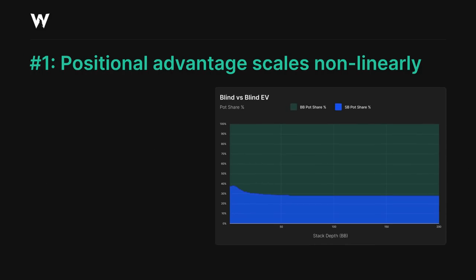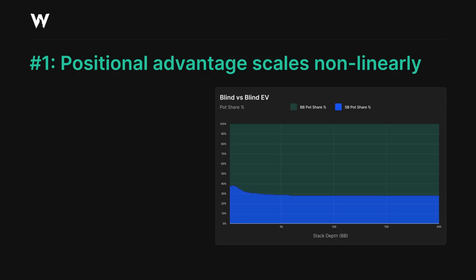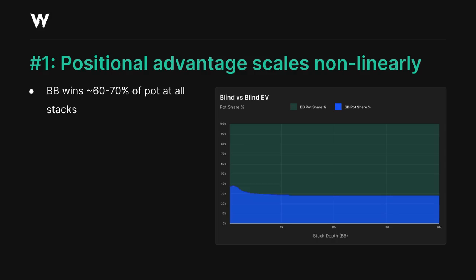One of the most important aspects about blind vs blind play is that while the big blind does possess an inherent positional advantage, that advantage does not scale in a purely linear fashion. This graph shows the EV of each player in a nine-handed game with roughly 2.6 big blinds in the pot when it folds around to the small blind.